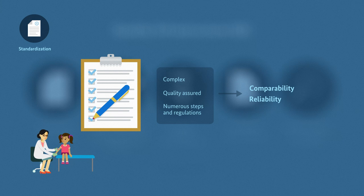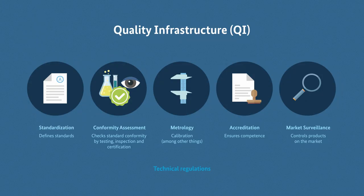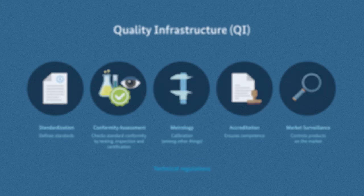In other words, the procedure is standardized, and so are the products involved. Standardization is one of the elements of quality infrastructure, providing guidelines on how something should be, including the quality system, products, services and procedures.